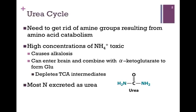We need to get rid of amine groups that result from amino acid catabolism. We can't afford to stockpile ammonia or ammonium ion — high concentrations are toxic. It causes alkalosis, a dangerously higher alkaline pH. Ammonia can also enter the brain and combine with alpha-ketoglutarate to form glutamate, which depletes citric acid cycle intermediates and severely compromises catabolism within the brain.